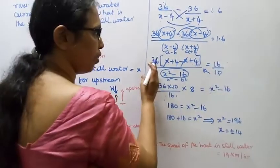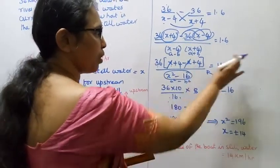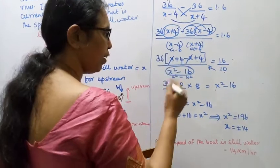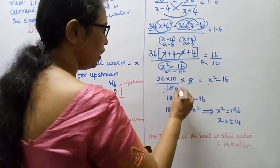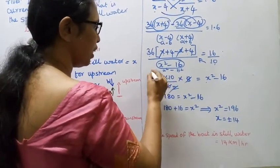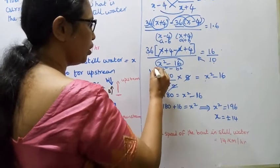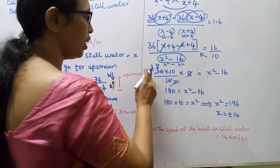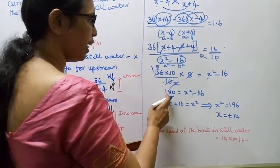Simplifying: 2 cancels with 16 to give 8. 2 times 8 is 16. 18 into 10 is 180. 180 equals x squared minus 16.